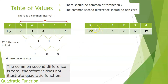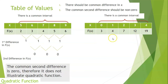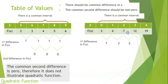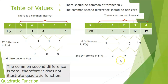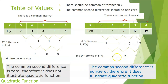Let's have another example. These are the x values and these are the y values. There is a common interval; the interval for x is 1. Getting the first difference: 4 minus 3 is 1, 7 minus 4 is 3, 12 minus 7 is 5, and 19 minus 12 is 7. Next, we get the second difference, which is 2. Therefore, the second difference is non-zero, so these ordered pairs define a quadratic function.